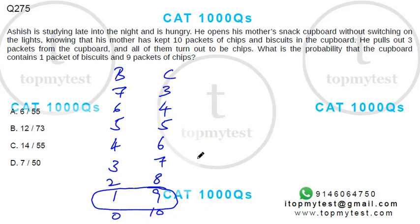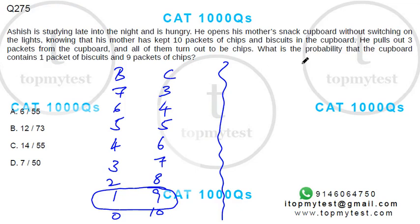This can be solved using conditional probability, or we can also solve it using sampling. Let's see how to solve it using sampling. He has picked out 3 packets and all of them turned out to be chips. If this was the case, the number of ways he could accomplish picking 3 packets out of 3 chips would be 3C3.